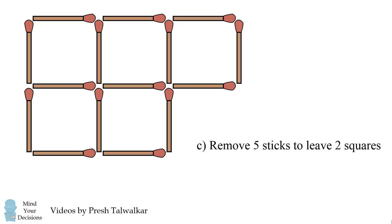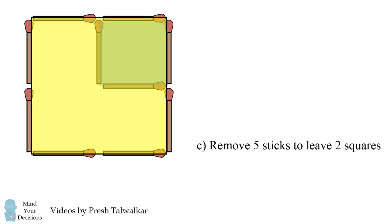Finally, how can we remove five sticks to leave two squares? We'll remove these three outer sticks and then we remove these two on the inside. We're left with one small square and one large square.